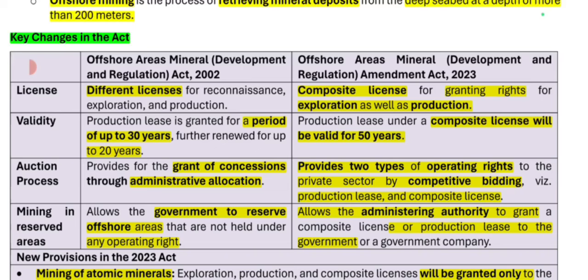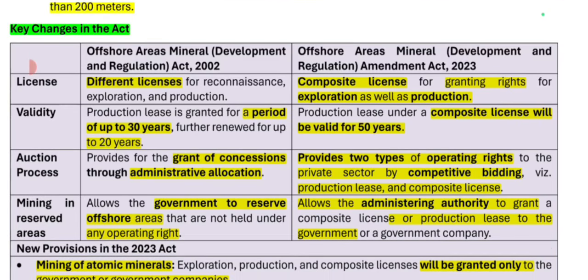What are the key changes between the 2002 Act and 2023 Act? First, regarding different types of licenses: previously you needed separate licenses to study, explore, and mine minerals — sometimes 3 to 4 licenses. But under the Offshore Minerals Act 2023, a composite license is provided for all three activities, meaning only one license covers exploration as well as production.